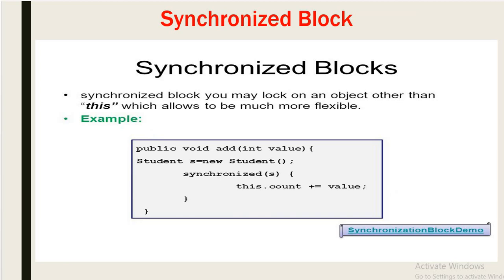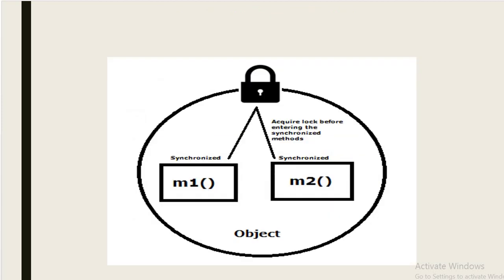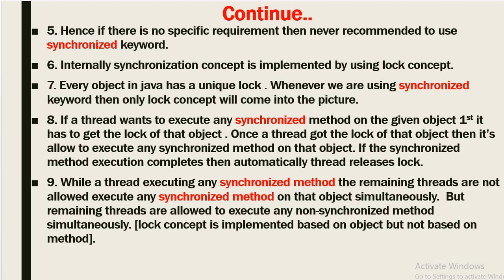A synchronized block can be declared on an object other than 'this', which allows much more flexibility. Here you can see the example — I have declared one method, and inside this method I have created one object of the Student class. Here I am using a synchronized block. A synchronized method provides the lock on the object and locks the whole object.